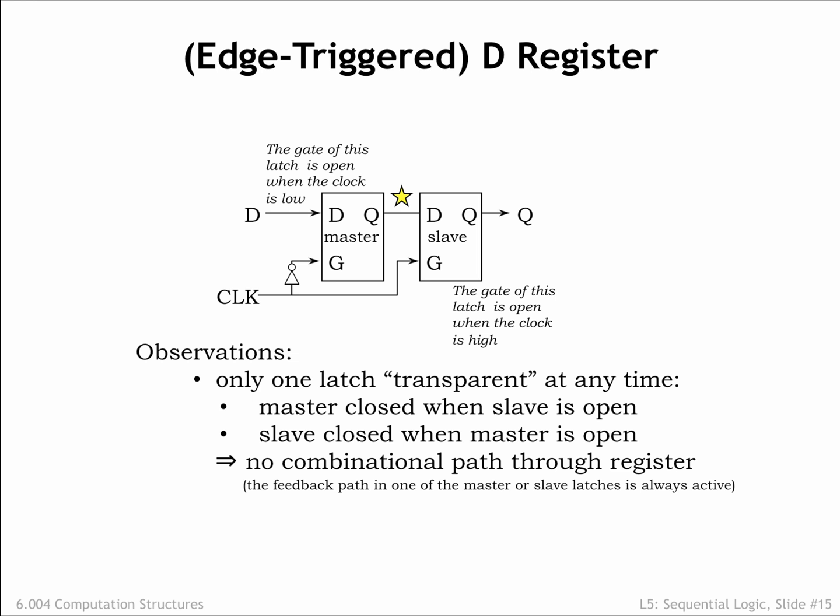The delay introduced by the inverter on the clock signal might give us cause for concern. When there's a rising 0-to-1 transition on the clock signal, might there be a brief interval when the gate signal is high for both latches, since there will be a small delay before the inverter's output transitions from 1 to 0? Actually, the inverter isn't necessary. There is a slightly different latch schematic where the latch is open when G is low and closed when G is high — just what we need for the master latch. By the way, you'll sometimes hear a register called a flip-flop because of the bistable nature of the positive feedback loops in the latches. That's the internal structure of the D-register. In the next section, we'll take a step-by-step tour of the register's operation.